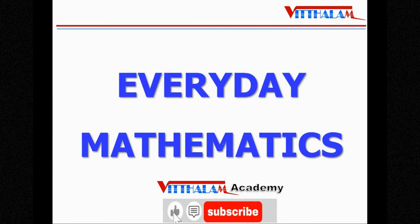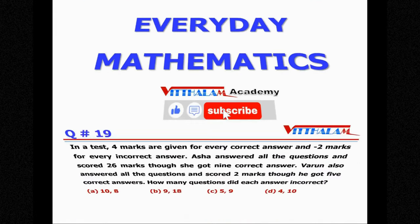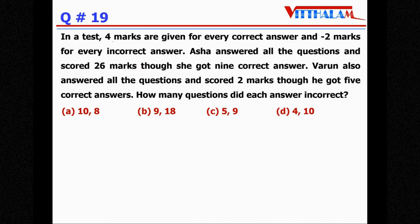Next, everyday mathematics section question number 19. In a test four marks are given for every correct answer and minus two marks for every incorrect answer, so there is a negative marking. If you do wrong answer you will be penalty, punish, so two marks punish that means minus two marks, or I will say two marks will be penalized, deducted something like that.